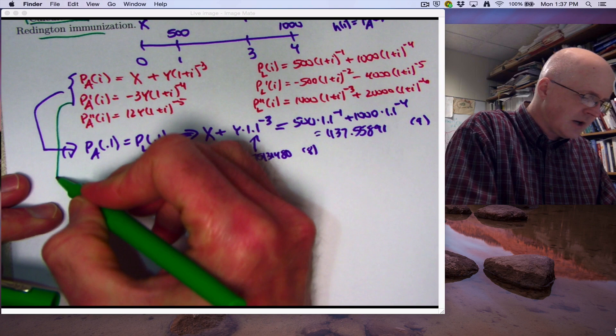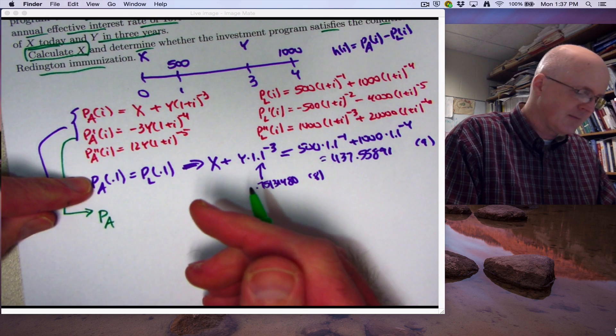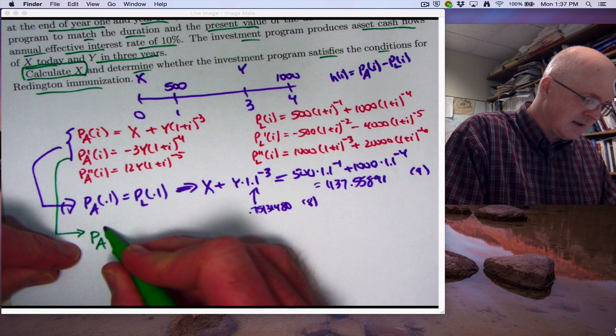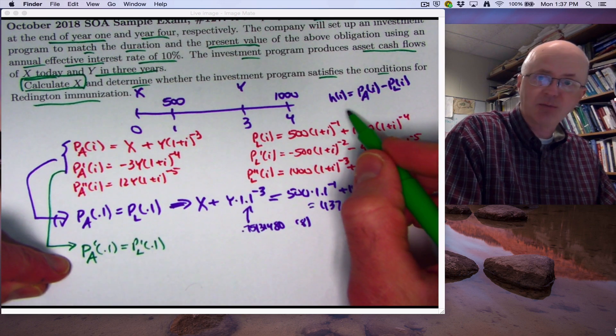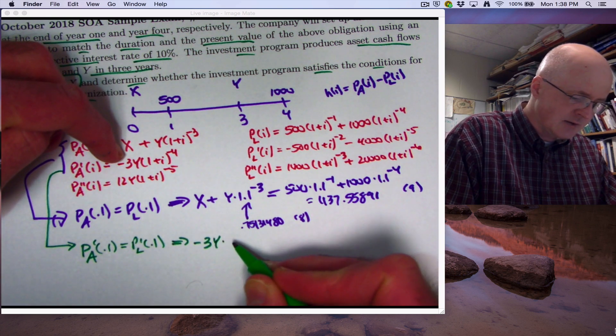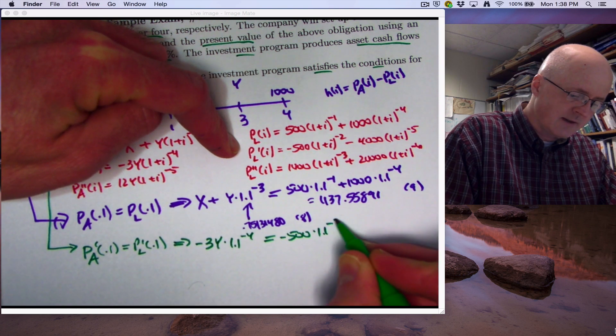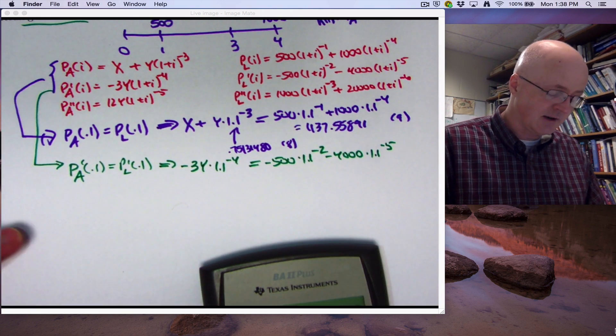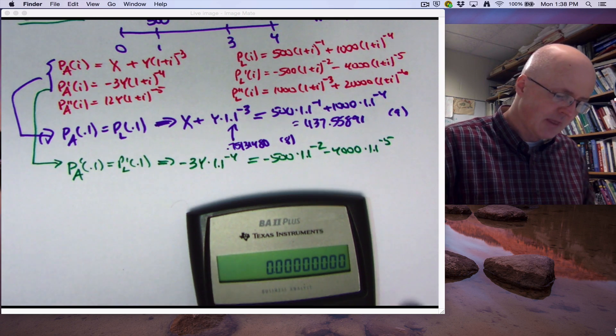Now take the second equation from matching the derivatives. And again, when you match present values, you're matching these functions. When you match the derivatives as well, you're matching durations. Think about it in terms of modified duration. Both of these things are going to be matching. First derivative for both of these functions at 0.1 equivalent to setting h prime of 0.1 equal to 0. Look at this expression right here. Negative 3y times plug-in i equals 0.1. 1.1 to the negative 4 must equal, look at this expression here, negative 500 times 1.1 to the negative 2 minus 4,000 times 1.1 to the negative 5. Of course, I could multiply everything by negative 1 to make those negative signs go away. I'll just do that in my head here. And effectively on my calculator, I won't bother writing it down.